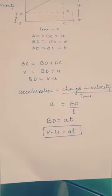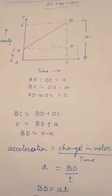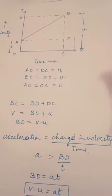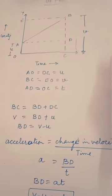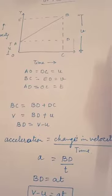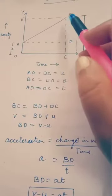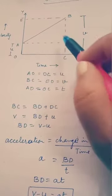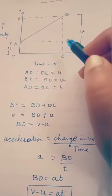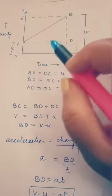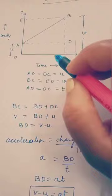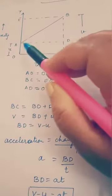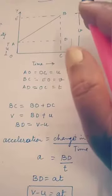Now let us move to the second equation, that is the position-time relation. The second equation is S equals to UT plus half AT square. From the graph, we can see slope AB. S is the distance covered by the body. From a velocity-time graph, distance equals the area under the slope — this I have already explained.